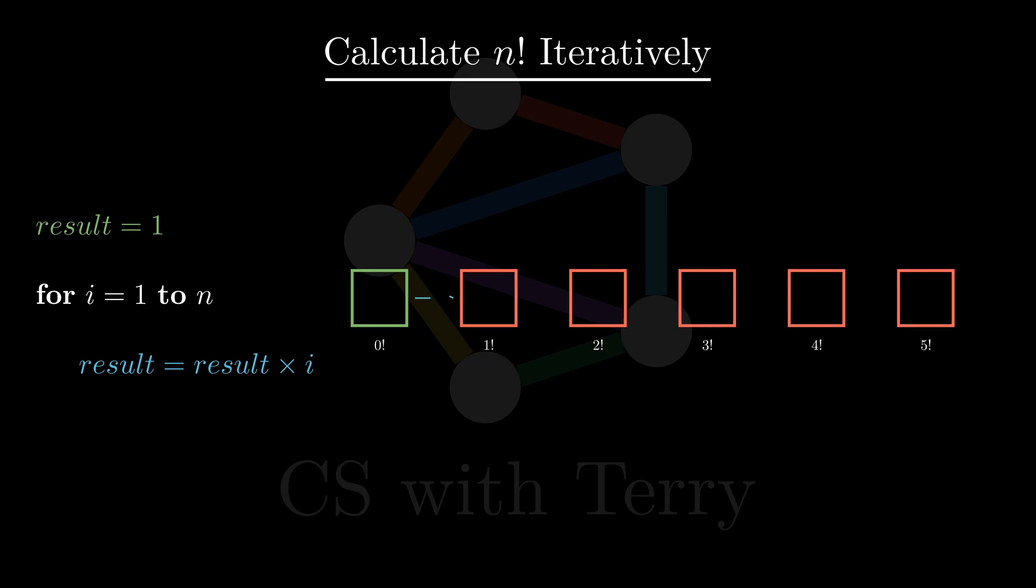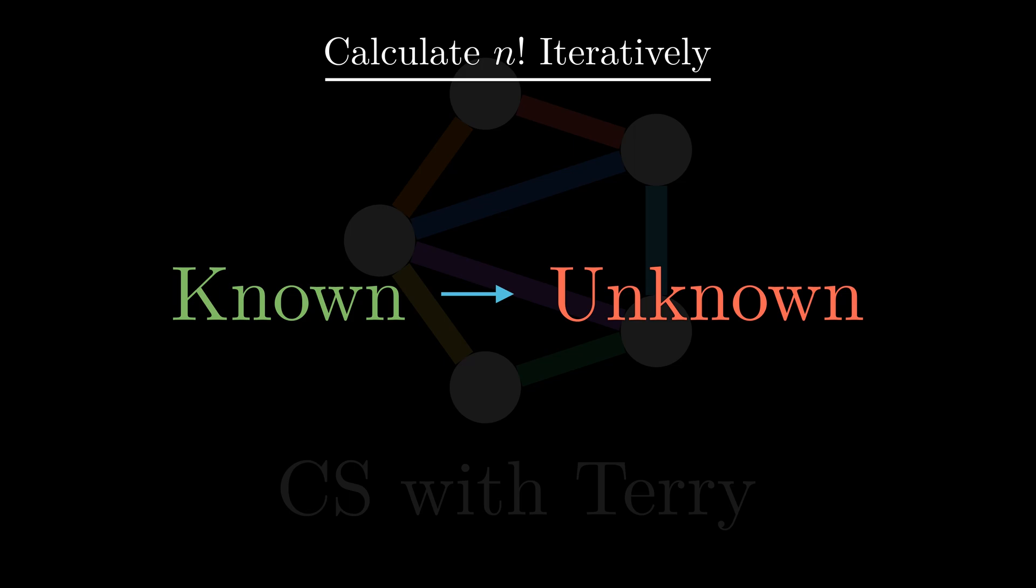To calculate n factorial, we definitely want to start with smaller numbers. For example, 1 factorial equals 1, 2 factorial equals 1 factorial multiplied by 2 equals 2, 3 factorial equals 2 factorial multiplied by 3 equals 6, etc. This way, you can calculate 4 factorial, 5 factorial until n factorial. Here, we use the sequential thinking approach when designing this iterative algorithm, which derives the unknown from the known.